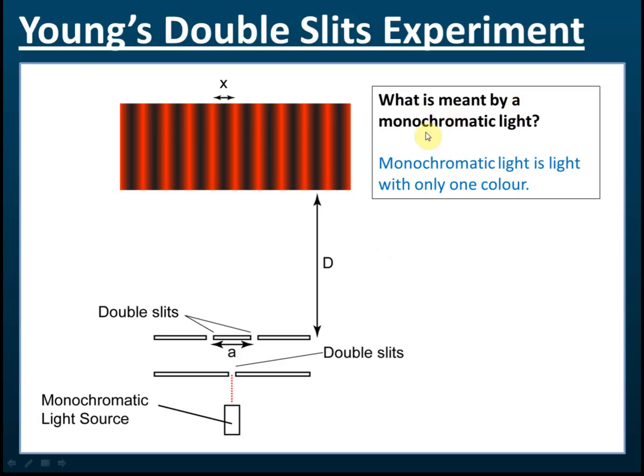What is meant by monochromatic light? Monochromatic light is light with only one color, or one frequency, or one wavelength.